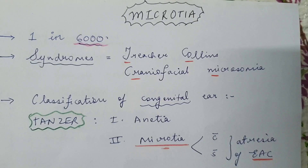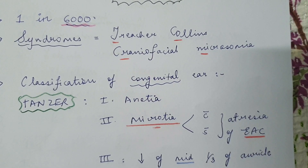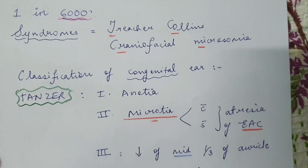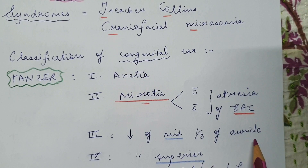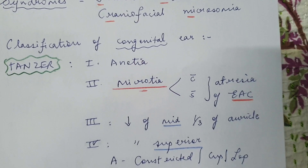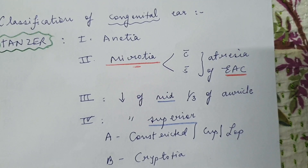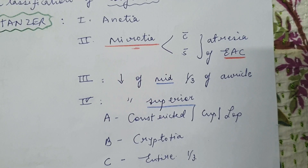The classification of congenital ear anomalies is also important, which has been described by Tanzer. In the first group we have complete absence of the ear, that is anotia. In the second group is microtia, where it can be present with or without atresia of the external auditory canal. The third group covers hypoplasia of the middle one-third of the auricle. The fourth group consists of hypoplasia of the superior one-third of the auricle, further sub-classified as 4A — constricted or cup ear or lop ear — 4B being cryptotia, which is hidden ear where the superior one-third stays embedded under the scalp, and 4C being entire absence of the superior one-third of the ear.